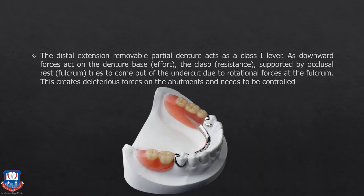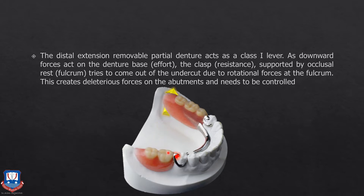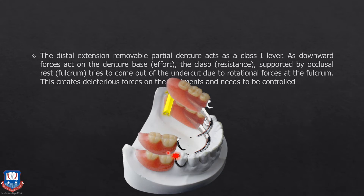In a distal extension RPD, the class 1 lever is of most importance. As downward forces act on the denture base in a Kennedy Class 1 or Class 2 bilateral distal extension situation — such as when a patient chews sticky food like chewing gum — the denture rotates around the occlusal rests on the terminal abutment teeth, which act as the fulcrum. The retainer on the abutment teeth must actively engage the abutment during lifting forces, thereby preventing dislodgement and improving stability.